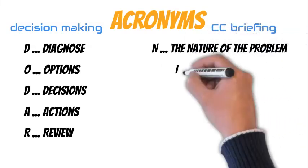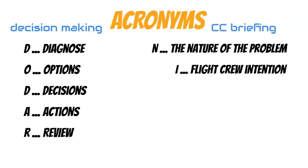NHTSA - The first letter means: N - The nature of the problem, I - Flight crew intention, T - Time to land.